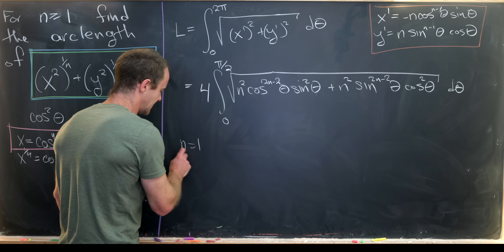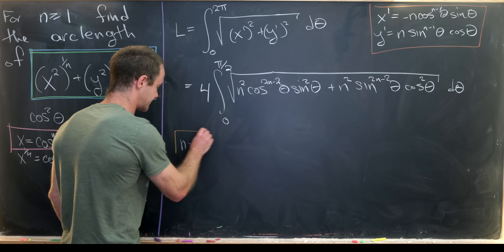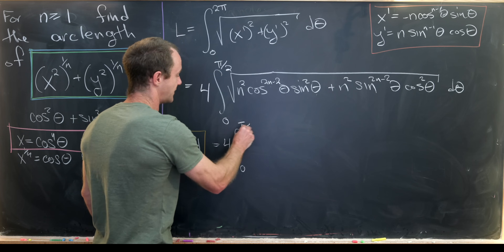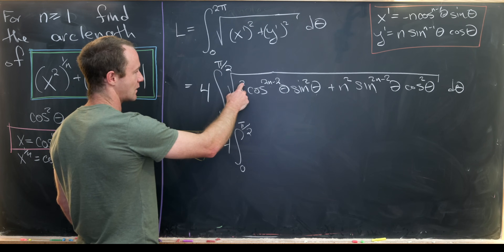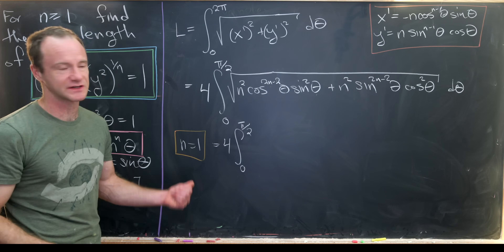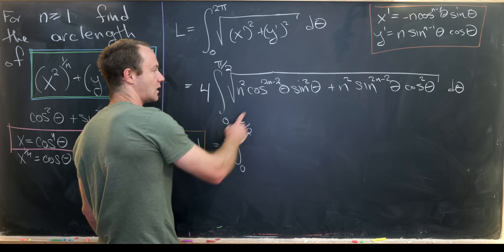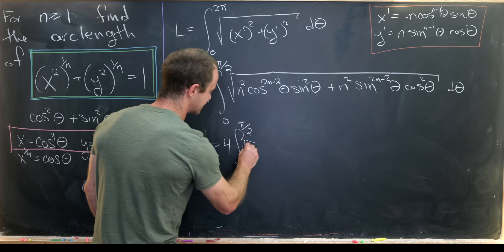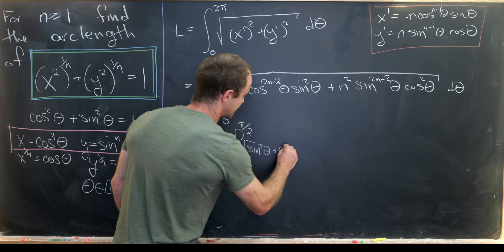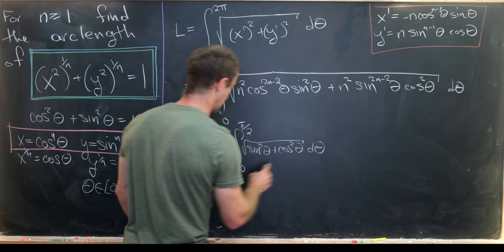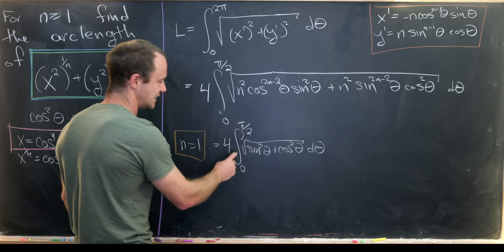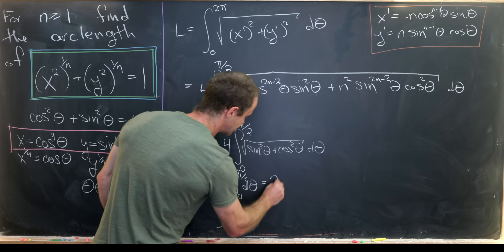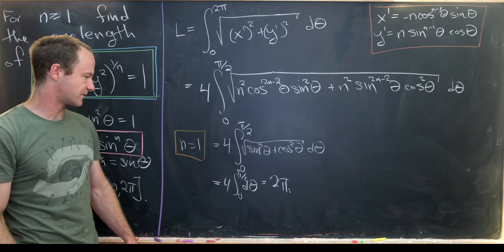Let's look at the n=1 case. We get 4 times the integral from 0 to π/2 — the n² is just 1. For n=1, cosine to the 0 and sine to the 0 both equal 1, leaving us with √(sin²θ + cos²θ) dθ. By the Pythagorean identity, that's just the integral of dθ, which gives us 2π — the circumference of the unit circle.